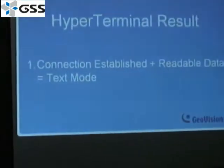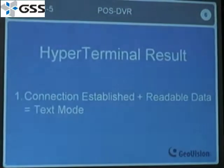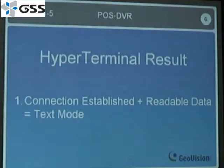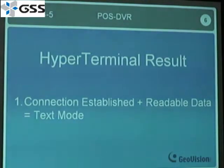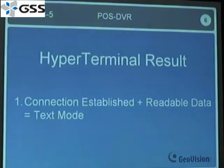If HyperTerminal shows these results, it's telling you that you have a text mode POST. If the connection can be established and the transaction data is readable — meaning you can understand those words, and the words on your receipts also appear on the screen — that's what readable means. There may be minor garbage characters between each transaction, but that's fine; our program can filter that out. And if you also see these characters on your camera screen, we can help you get rid of them, and we'll talk more about that in a later session.